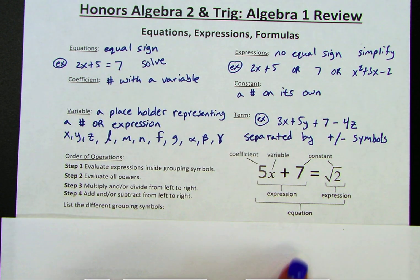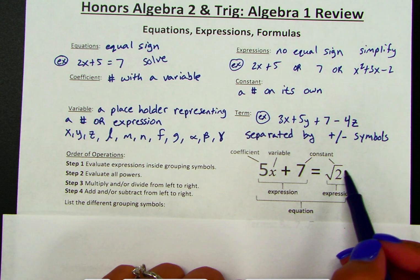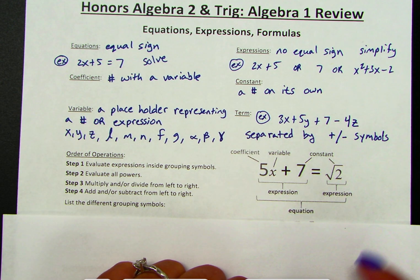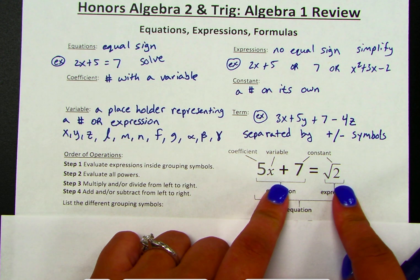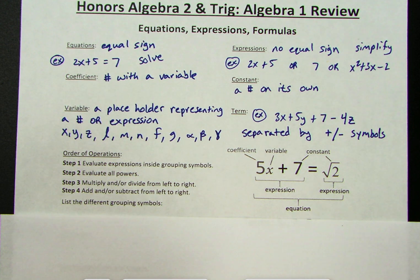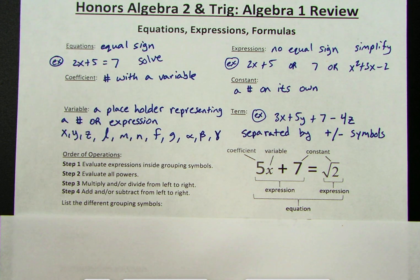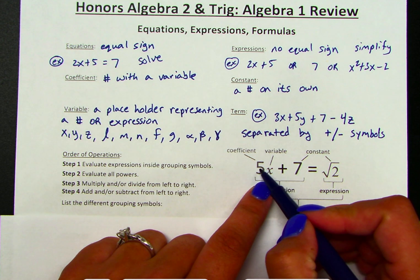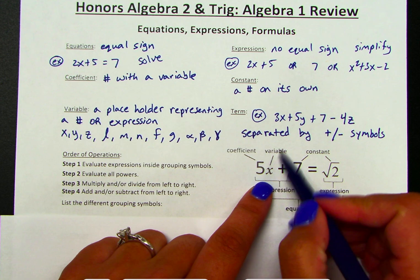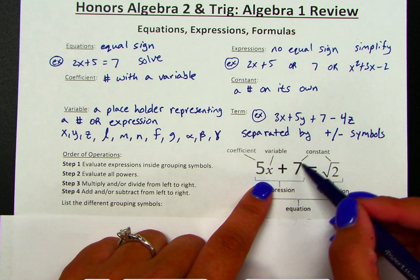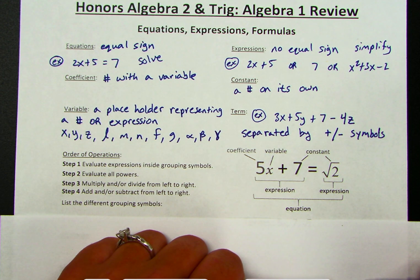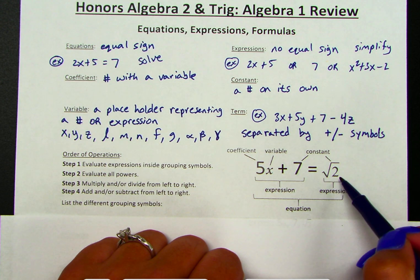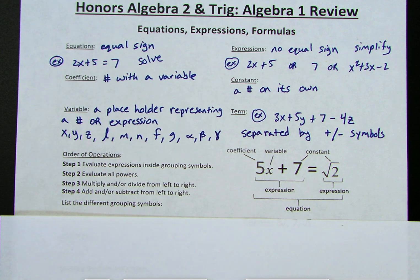Here's another example of how all of those things are related. Because of the equal sign, the whole thing is called the equation. Each side is an expression, and within those expressions we can have a combination of coefficients, constants, and variables. So we have two terms on one side — 5 is a coefficient because it's paired with a variable, x is the variable, and 7 is a constant because it doesn't have a variable. On the other side, we have one term, which is a constant.